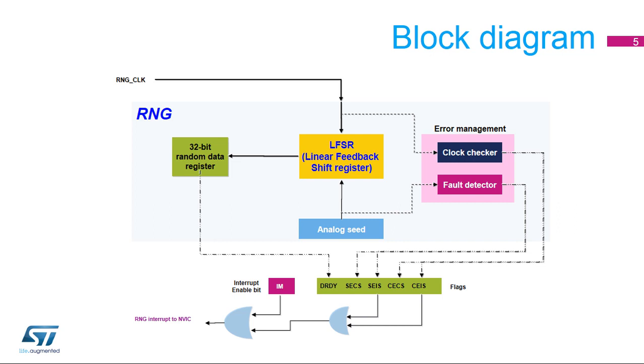The random number generator is based on an analog circuit made of several ring oscillators whose outputs are XOR'd to generate the seeds that feed a linear feedback shift register in order to produce 32-bit random numbers. The linear feedback shift register is clocked by a dedicated RNG clock signal so that the quality of the random number is independent of the HCLK frequency.